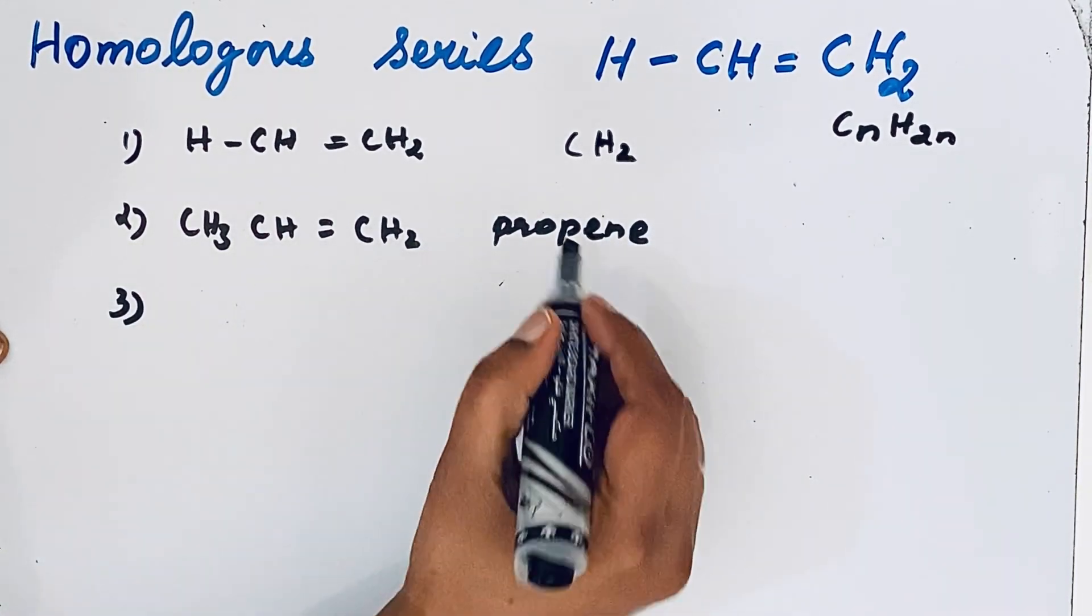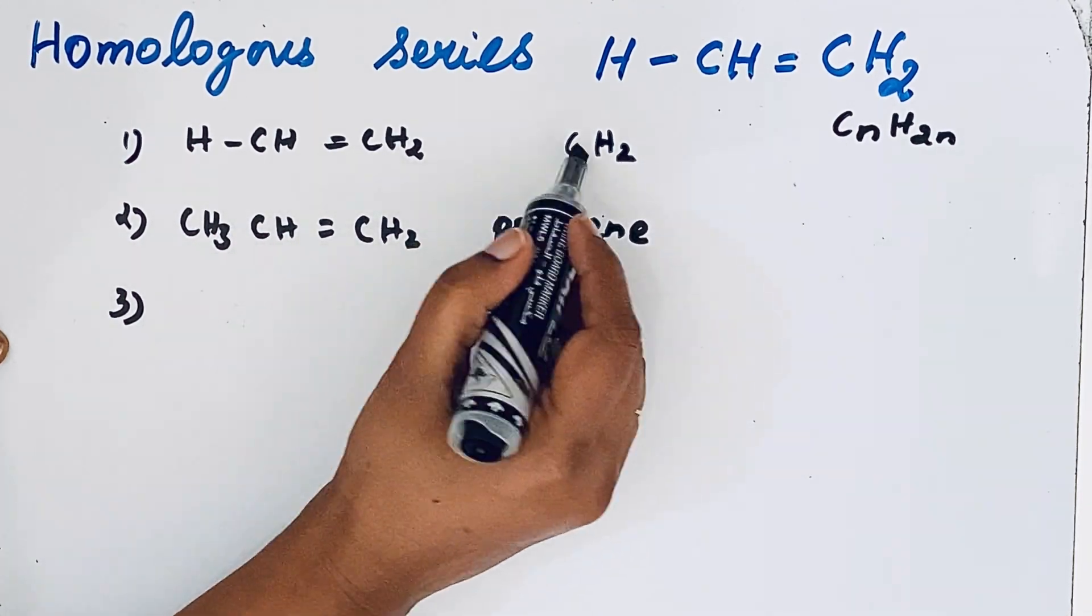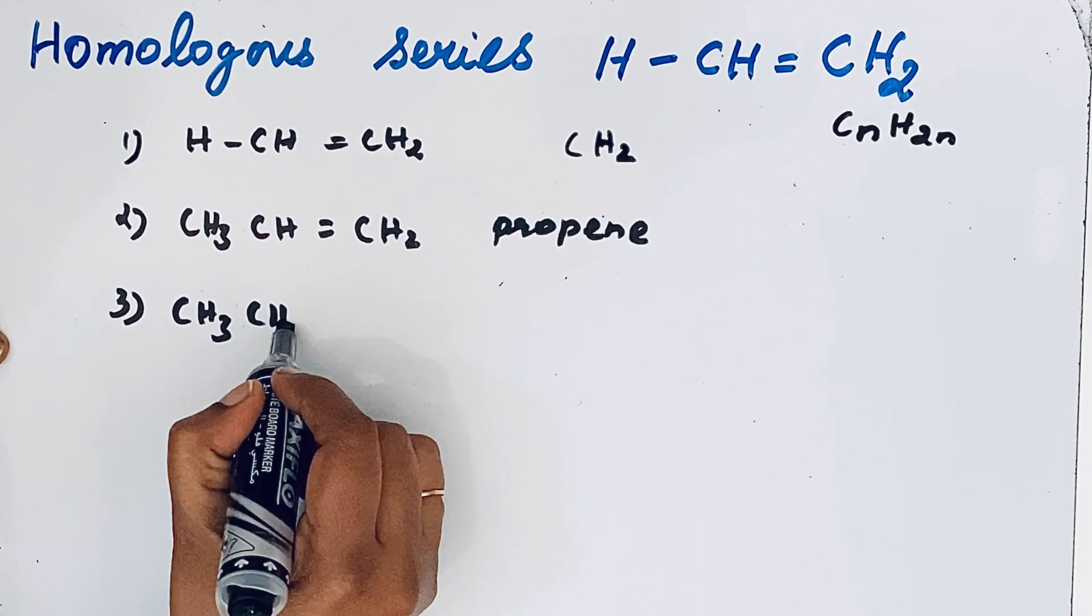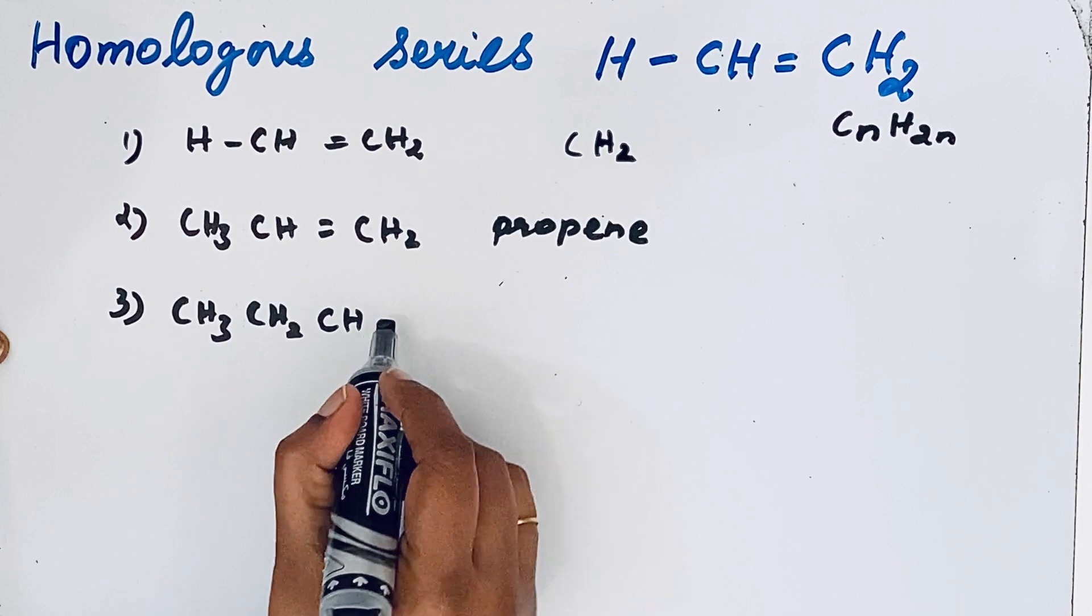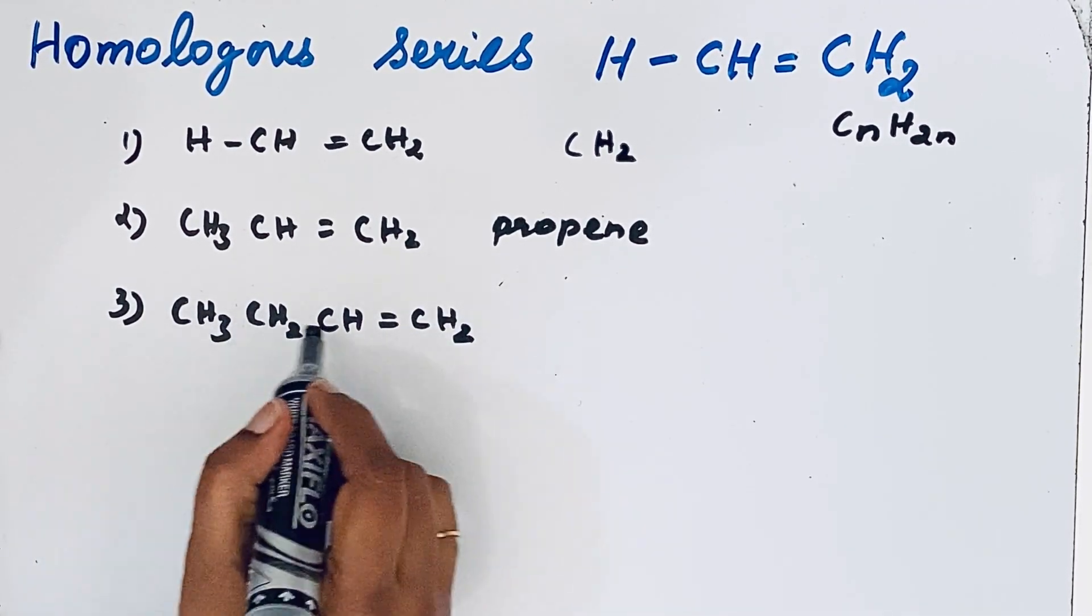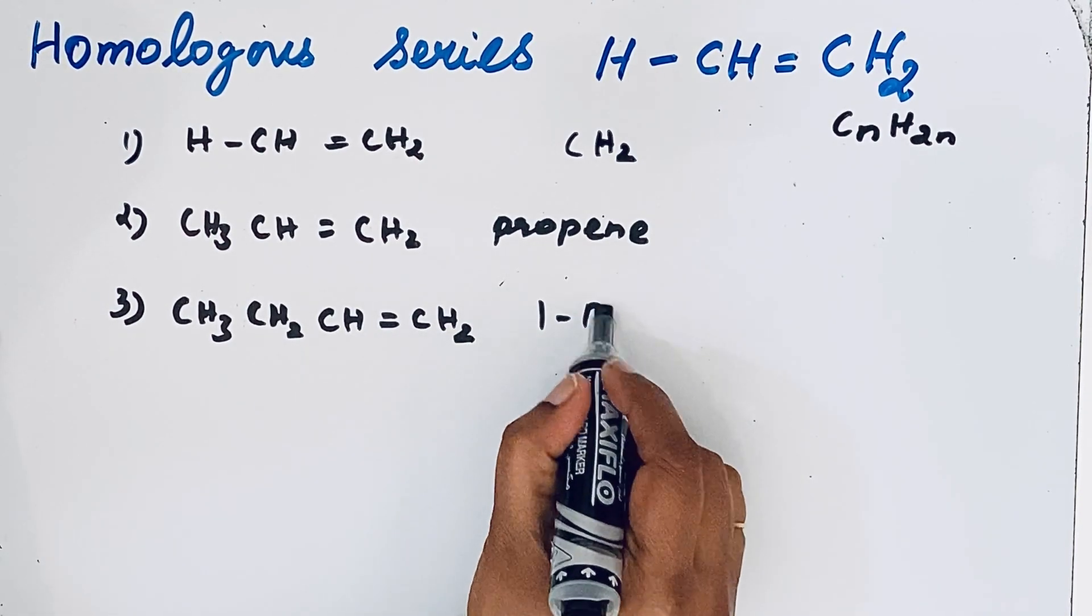Then the third one, again we are going to add that CH2 group. The CH2 group you can add here. So CH3, now CH2 group, then remaining all other things are the same: CH=CH2. What is the name of this compound? Four carbon atoms are there, so it is butene, one-butene.